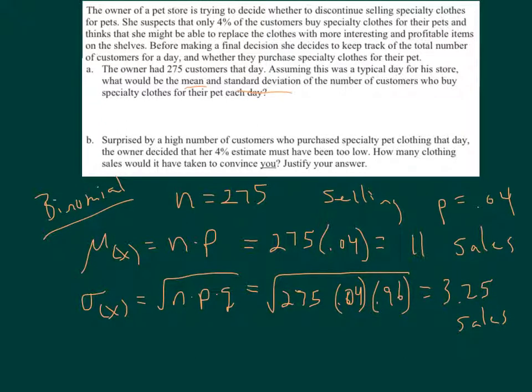Okay. How'd you do? I got an average of, if she truly expects 275 customers, and if truly only 4% of customers buy specialty clothes for their pets, then I would expect about 11 sales in that genre of sales, with a standard deviation of 3.25 sales.